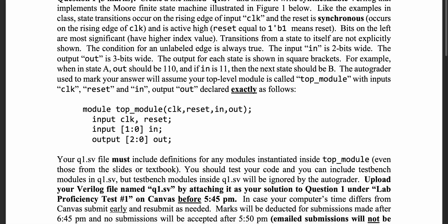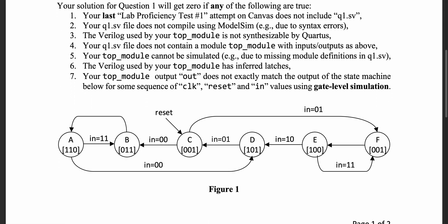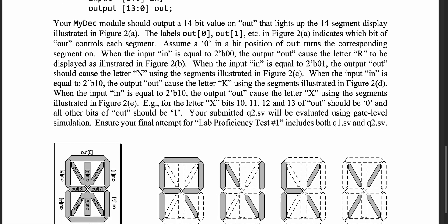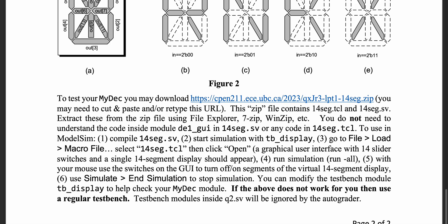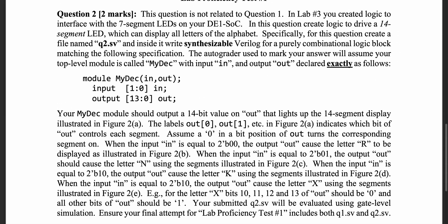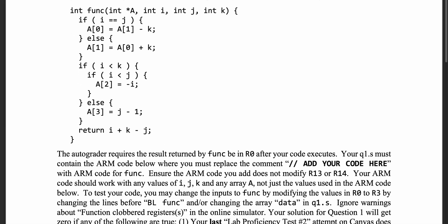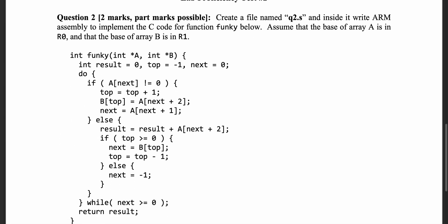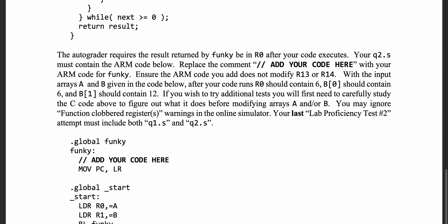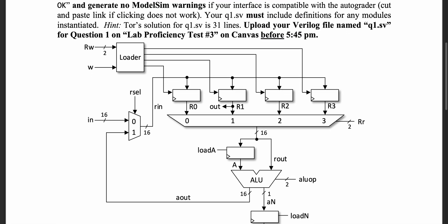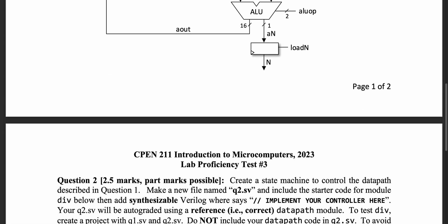The LPTs consist of 2 questions each, and depending on the question, there may be some part marks. The first LPT will be based on lab 3 and will most likely consist of a finite state machine question or some sort of combinational logic module question. The third LPT will be based on labs 5 and 6, and will most likely ask you to code a datapath module and its control functionality.